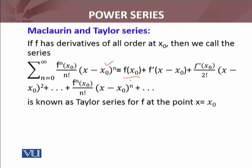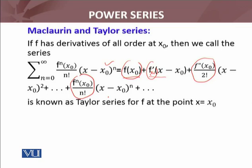If I expand this series, I will have f(x naught) plus the first derivative at x naught divided by 1 factorial times x minus x naught to the power 1, plus the second derivative of f evaluated at x naught divided by 2 factorial times x minus x naught squared. Note that all these terms with x minus x naught are constants — the function's derivatives evaluated at a particular point x naught give a real number, divided by n factorial, which is also a real number. This series, which you are familiar with, is called the Taylor series of the function f at the point x equals x naught.